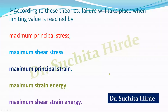Various theories have been developed to explain failure criteria when the member is in a complex state of stress. These are normally called theories of failure or theories of elastic failure. According to these theories, failure will take place when the limiting value is reached by maximum principal stress, maximum shear stress, maximum principal strain, maximum strain energy, or maximum shear strain energy. Based on this, there are five theories of failure.